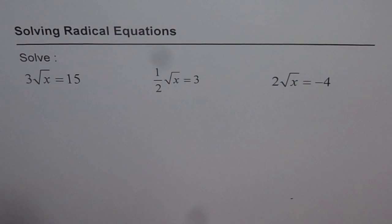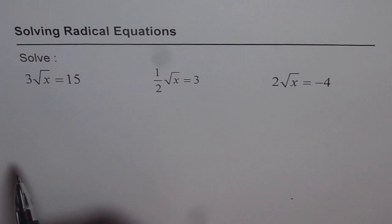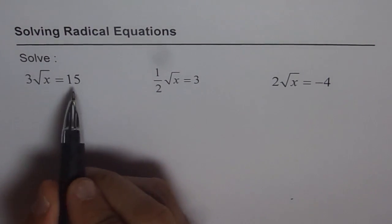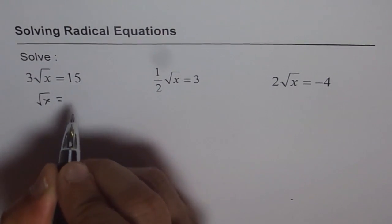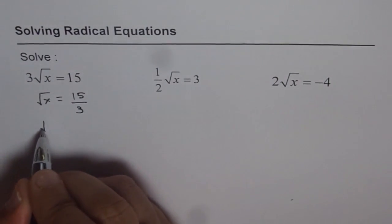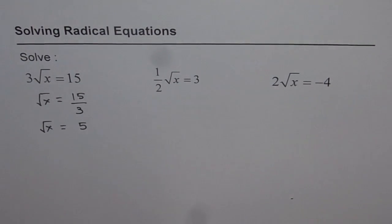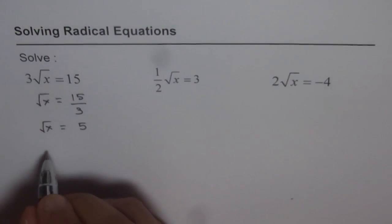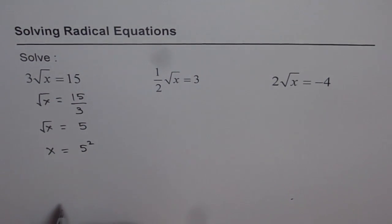We have the first one as 3√x = 15. What we can do is divide both sides by 3, and then we get √x = 15/3. That is √x = 5. Now to get the value of x, we should square both sides. So let's square both sides. That will give us x = 5², which is 25.